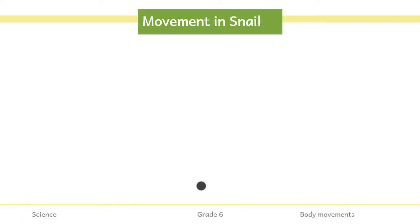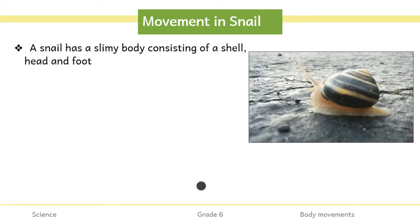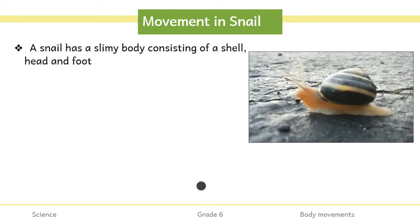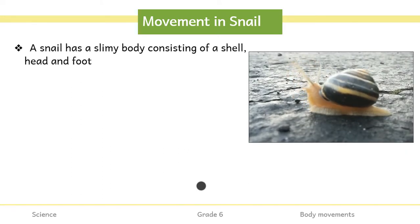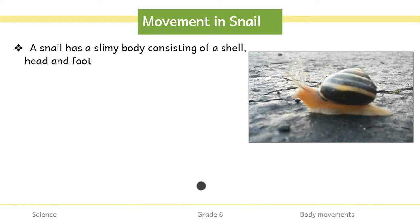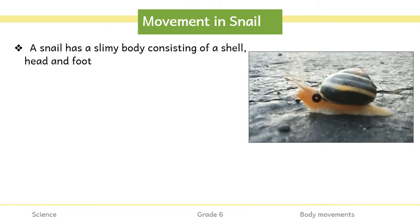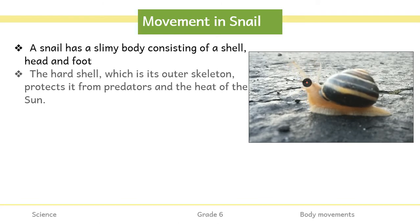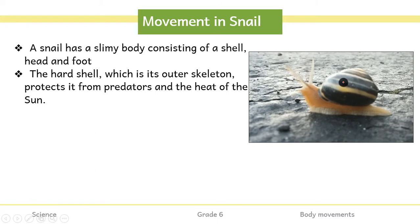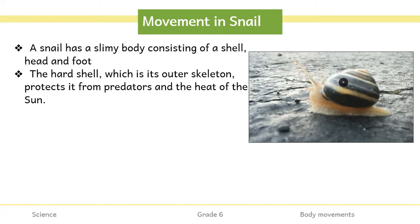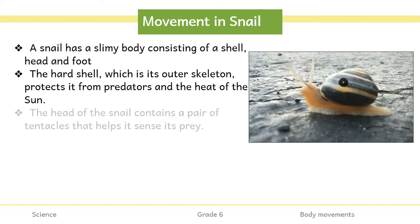We first talk about movement in snail. Snail has a slimy body consisting of shell, head and foot. Slimy means it has mucus all over — a sticky substance. It has a shell, head, and a long muscular foot present at the bottom. The shell is important because it protects the snail from any kind of predator — basically something which eats the snail — and from the heat of the sun.